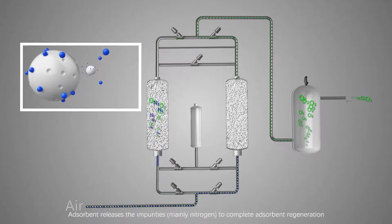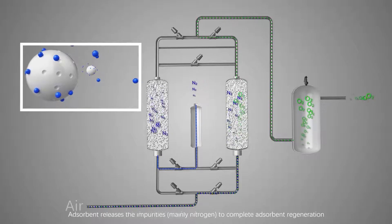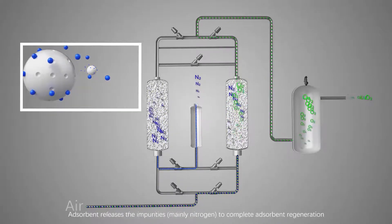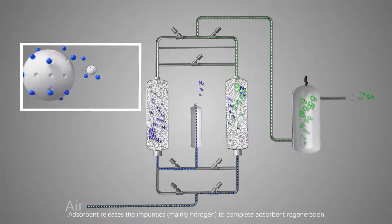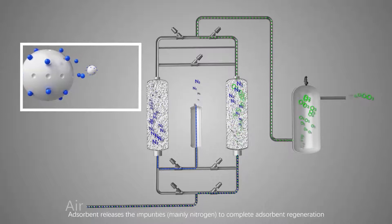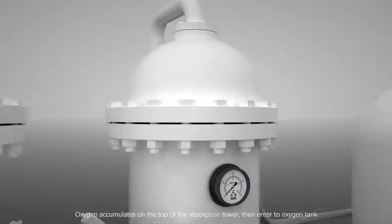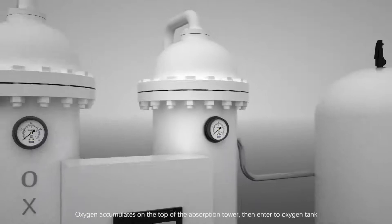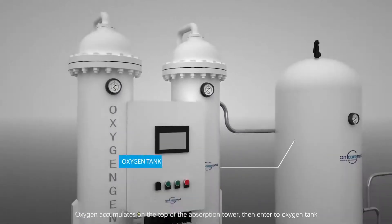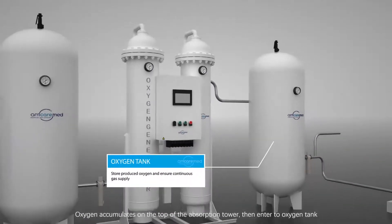The absorbent releases impurities, mainly nitrogen, to complete adsorbent regeneration. Oxygen accumulates at the top of the absorption tower and then enters the oxygen tank.